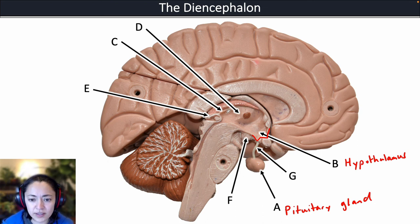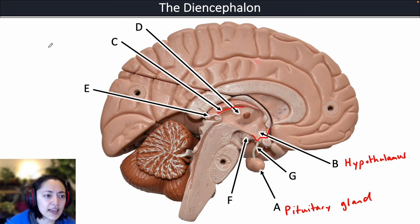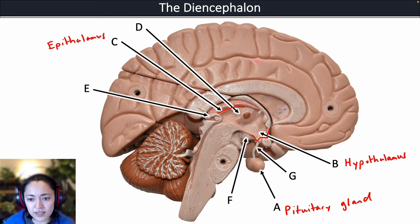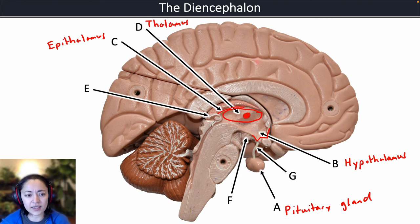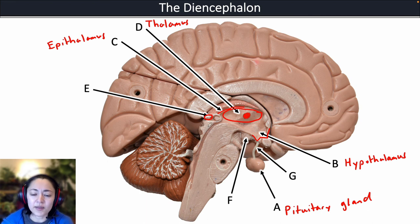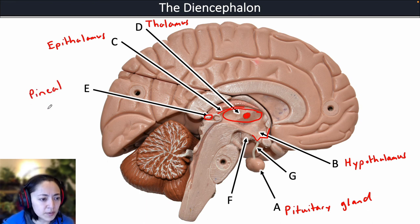C is pointing to this thin structure at the top of the diencephalon — that is the epithalamus. D is pointing to the large section in the middle, where you can see the interthalamic adhesion — so D is pointing to the thalamus, right in the middle of the diencephalon. E is pointing to the small structure in the back of the diencephalon, which would be the pineal gland.